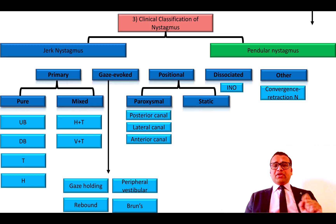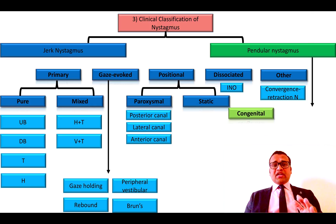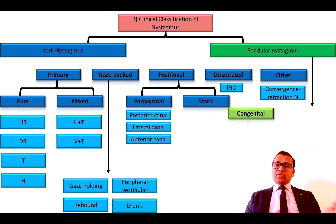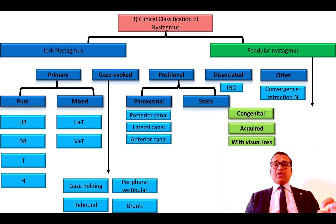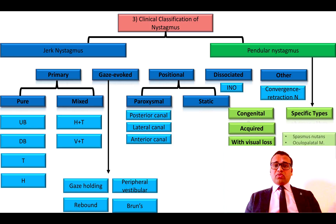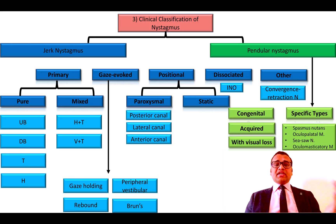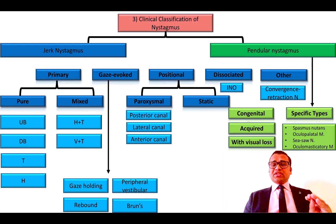Coming to pendular nystagmus, it could be congenital pendular nystagmus or acquired pendular nystagmus. Or it could be pendular nystagmus associated with visual loss. There are also specific varieties such as spasmus nutans, oculopalatal myoclonus, seesaw nystagmus, or oculomasticatory myorrhythmia, which is seen in Whipple's disease.